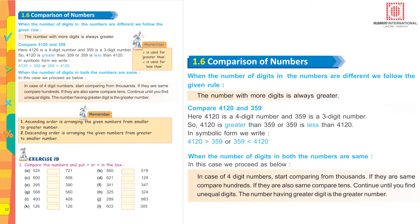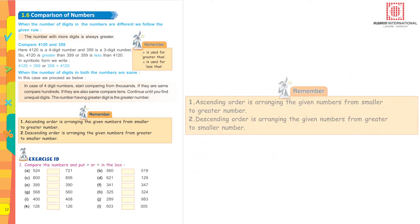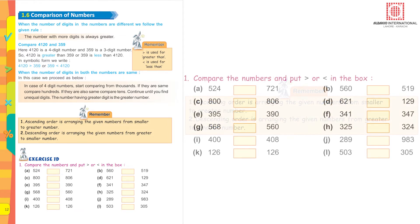Ascending order is arranging the given number from smaller to greater number. Descending order is arranging the numbers from greater to smaller numbers. Compare the numbers and put the sign of greater than or less than in the box.